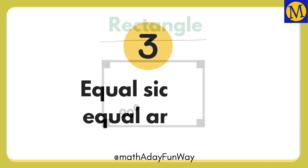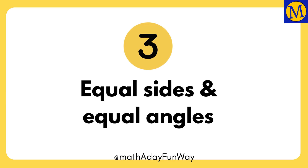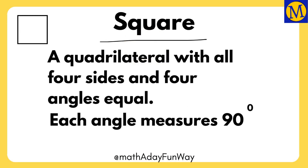The third property is equal sides and equal angles. A quadrilateral whose all sides and all angles are equal is called a square.